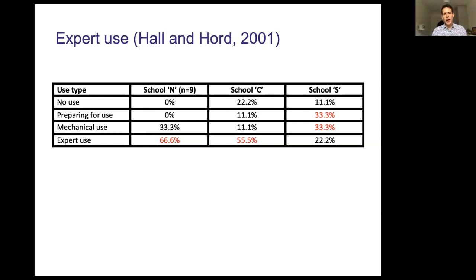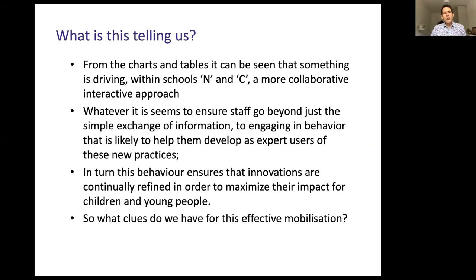We know that the types of use having the biggest impact on students are the expert uses, so the schools most likely to have the best outcomes for students are school N and then school C. What we can see is that something in school N, and to a lesser extent school C, is driving collaborative and interactive approaches. As a result, staff go beyond just exchanging information into in-depth collaborative activity that helps them develop as expert users — and as a result, this improves outcomes for children.